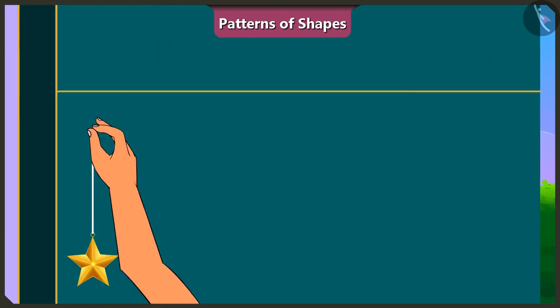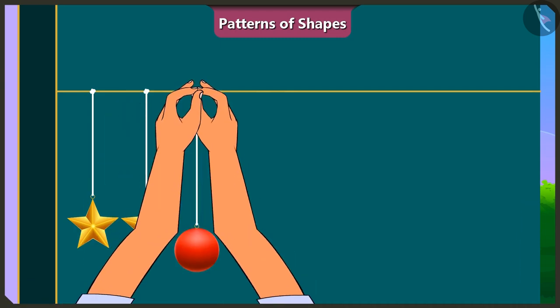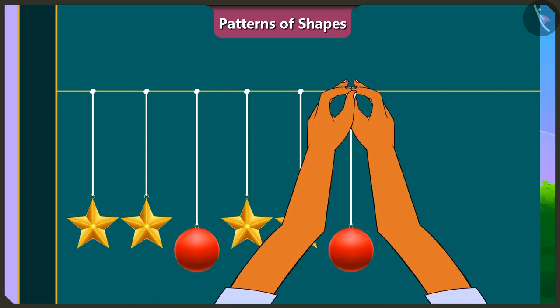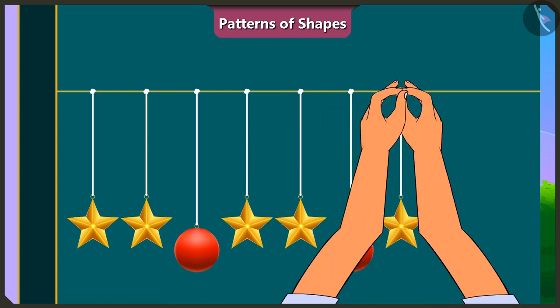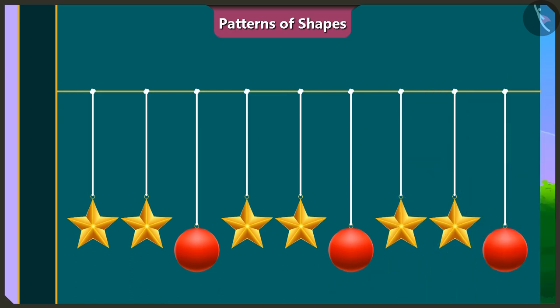We can put two stars and a sphere on a strong thread like this. Yes. And then we can put two stars and a sphere like this again. And we can continue with this pattern. Yes. And now the toran is complete by repeating this special pattern. The pattern of this toran is really beautiful. Very good. Both of you have decorated the door beautifully.